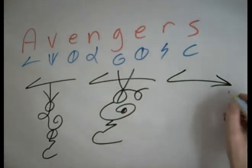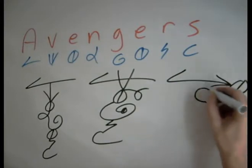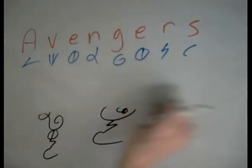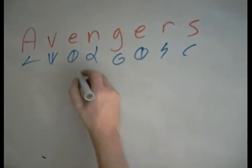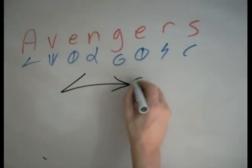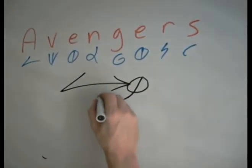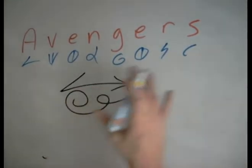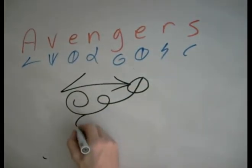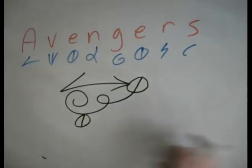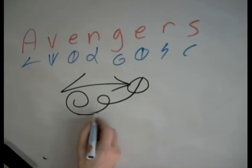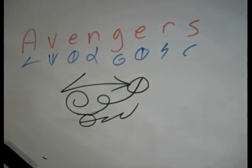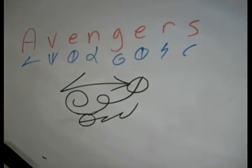So let's try again here. A, V, E, N. Oh, I like this version here. I've got an idea. A, V, E, N, G. How am I going to get it over there again? Just put it here. E, E, R, S. Not bad. I kind of like that version.